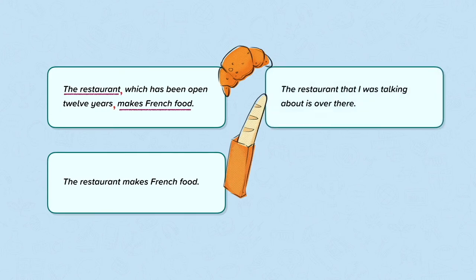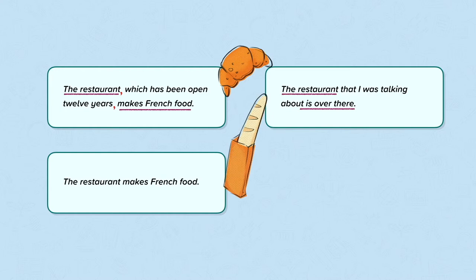But if we look at this sentence: "The restaurant that I was talking about is over there." The independent clause is "the restaurant is over there." In this case, the information "that I was talking about" is essential to the meaning of the sentence — it tells us which restaurant it is. Therefore, there are no commas to separate the dependent and independent clause.